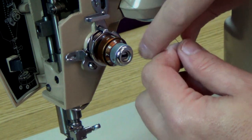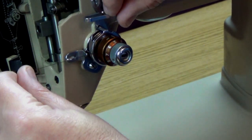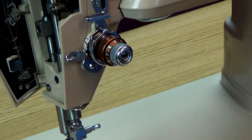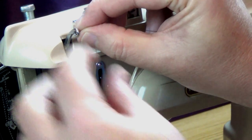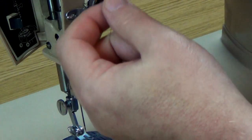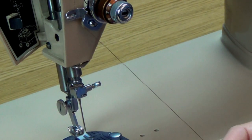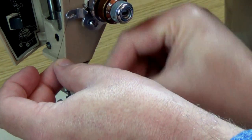Then down and between the tension discs. Pull the thread up through the tension spring into this notch. Then from right to left through the take-up lever. Down and into the thread guide to the left of the tension assembly. And through the three thread guides on the needle bar.